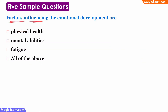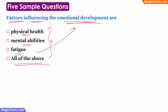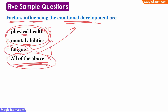The next question asks: which factors influence emotional development? This can be answered using common sense. If a child is physically not healthy, the child will feel depressed and sad, so emotional development is impacted by physical health. If the child is not mentally developing, mental abilities are also important for emotional development. If the child has fatigue and is always tired, the child cannot focus on emotional development. Therefore all of these are factors that influence emotional development, and the correct answer is all of the above. If you can identify that two options are factors, the answer must be all of the above.